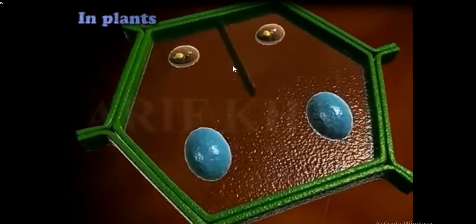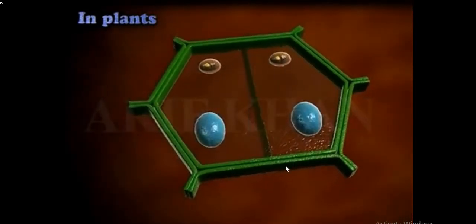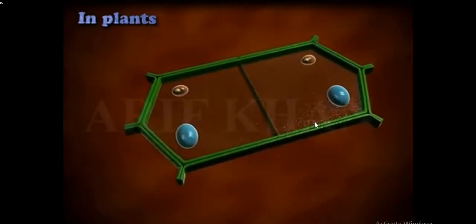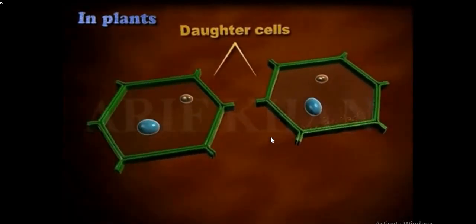In case of plants, just at the center a cell wall is formed followed by the elongation of the cell plate region, and when appropriate size is reached, cell division takes place. This is how mitosis in plants takes place.